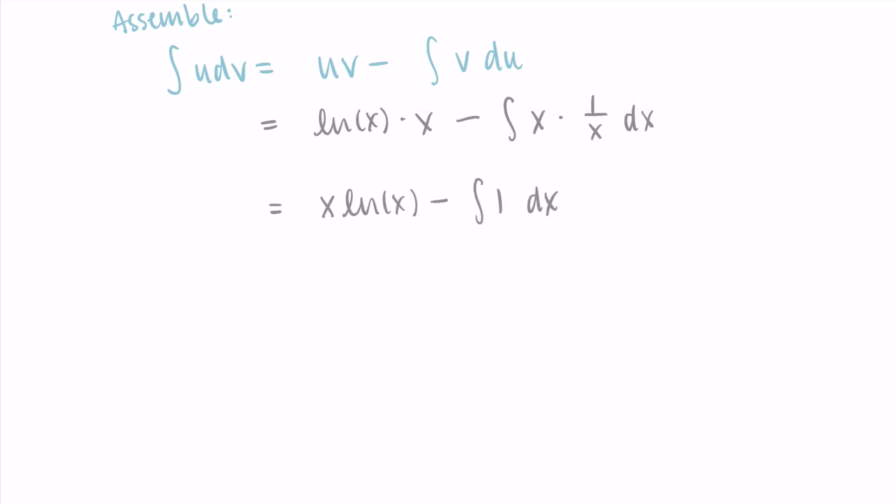I have x natural log of x, and now I'm subtracting the integral of 1, since x times 1 over x is 1. The integral of 1 dx is just x, so I have x ln(x) minus x. Now I'll put on my plus C to represent a general antiderivative.